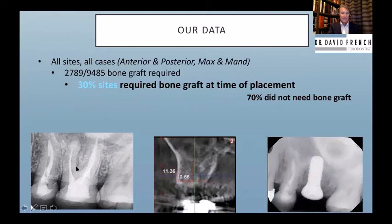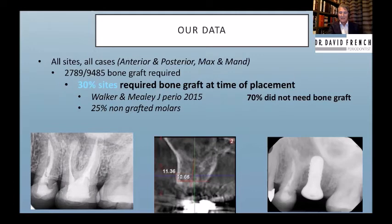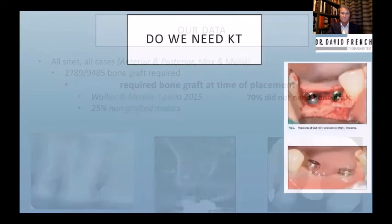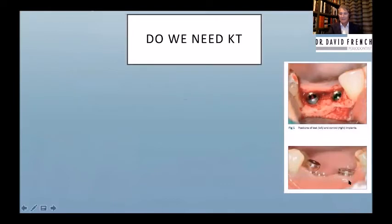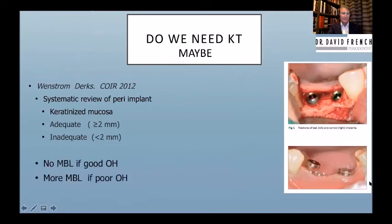Here's an example — a dental assistant who came to us because other clinics wanted to socket graft her. We didn't; the width and height were fine. We graft 30% of sites overall. Mealy found 25% of posterior sites needed a graft, so in general a quarter to a third of cases may need bone grafting, meaning 60–70% are better off without it. What about keratinized tissue? Systematic reviews show: with good oral hygiene, adequate vs. inadequate keratinized tissue makes no difference in bone loss — but with poor oral hygiene it does matter. It's beneficial for non-compliant patients and makes hygiene more comfortable.